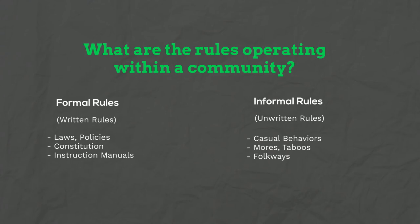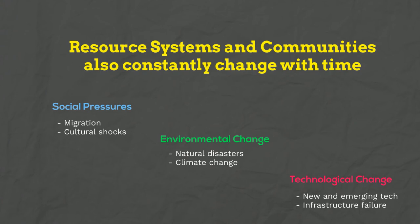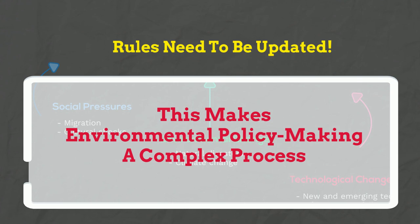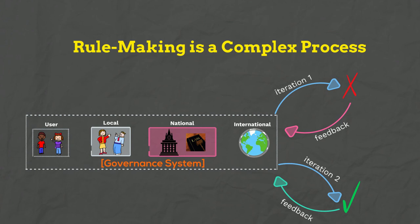It is also important to understand that the resource systems and the communities themselves are constantly changing with time as they face new social pressures or environmental and technological changes. Because of these pressures, they have to keep updating their governance rules or make new rules in order to adapt to the changes. This constant updating of rules is also something that makes environmental policy making a complex process, as we can never know beforehand what a perfect rule would be in a given context. Sometimes we just have to experiment with different strategies, see what works and what doesn't, and based on this feedback, try something new again. Doing this requires a considerable investment of time and resources in learning about the effects of various rules on the behavior of participants and the results they can achieve.